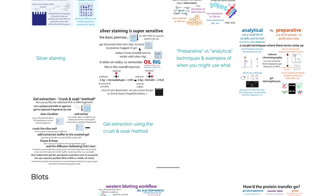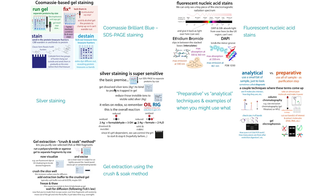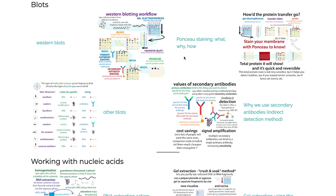All those staining methods show you everything that's there — all different proteins or all nucleic acids present. If you're interested in seeing whether a specific protein is there, you're going to look toward a Western blot, and if you want to look for a different type of molecule like DNA or RNA, you'll use some other sort of blot. With blots, basically we take molecules out of the gel and transfer them to a membrane — something like a nitrocellulose or PVDF membrane — something sturdier that the proteins or nucleic acids can't just diffuse off of. We can then probe it to detect if a certain sequence or protein is present.